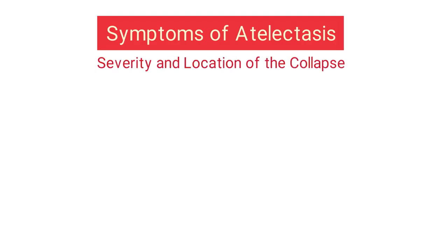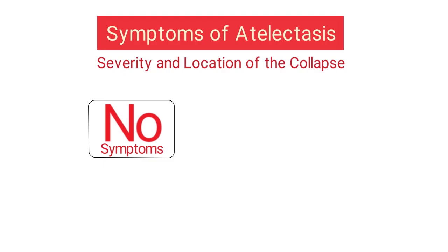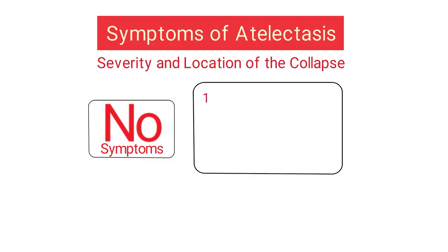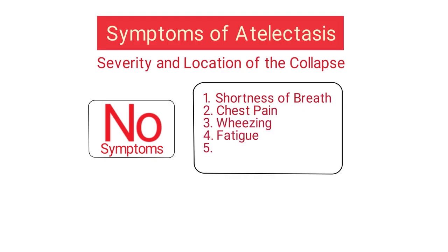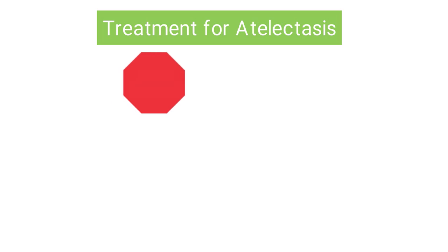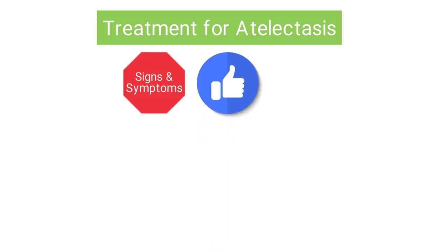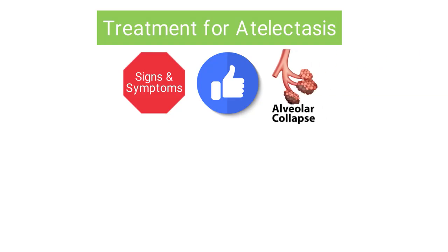The symptoms of atelectasis will depend on the severity and location of the collapse. In some cases there may be no symptoms at all. However, in other instances patients may experience shortness of breath, chest pain, wheezing, fatigue, cyanosis, and tachypnea. The treatment may vary depending on the patient's signs and symptoms, but the most effective treatment method involves correcting the underlying cause of the patient's alveolar collapse.